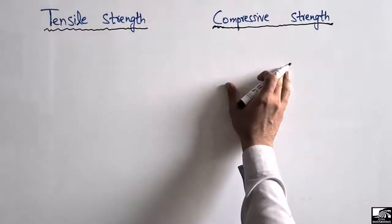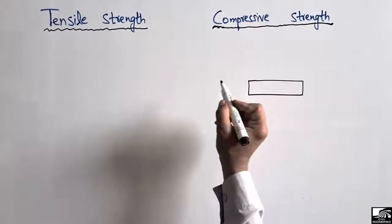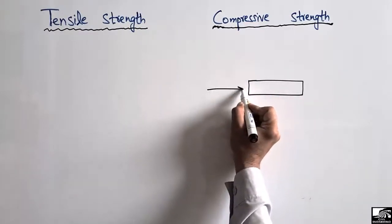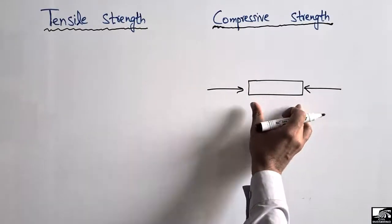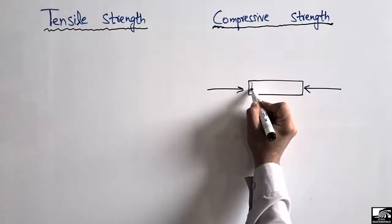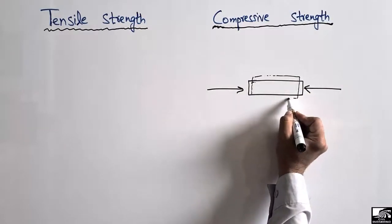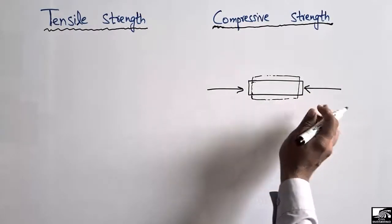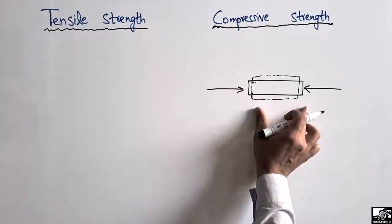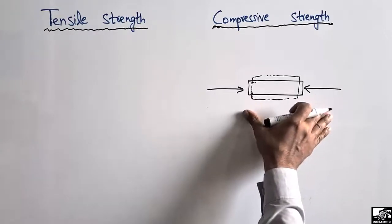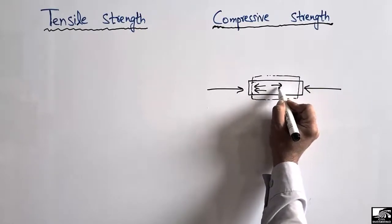To explain with the help of an example, let's consider this is a steel rod and we apply a compressive load on it. Due to the application of the compressive load, it will try to compress the object and squeeze it. So due to the compressive load, this object will compress — that's why we say there is a compressive load acting on this material.